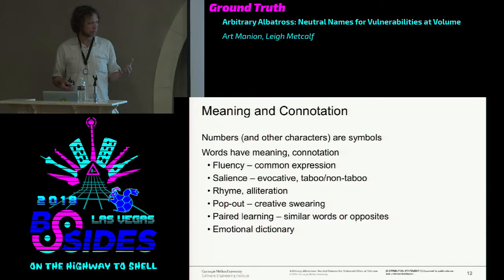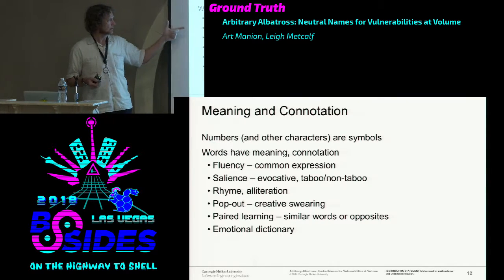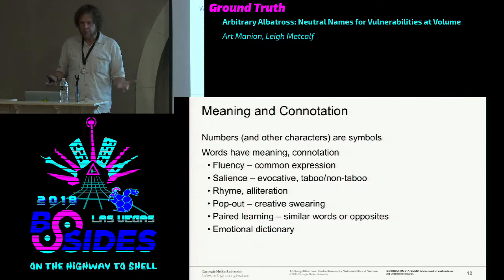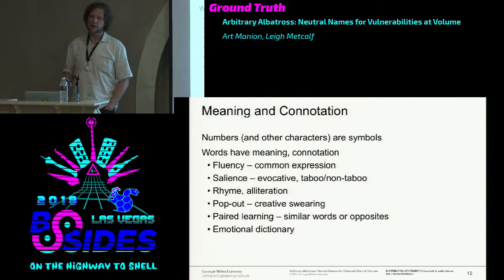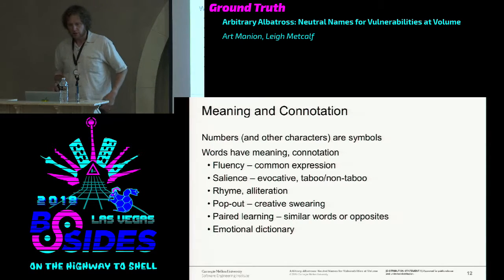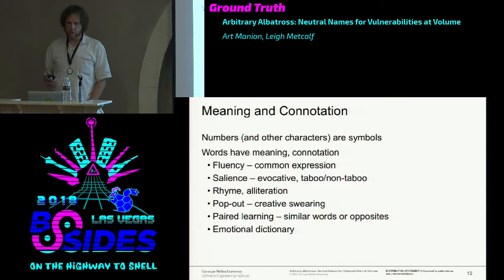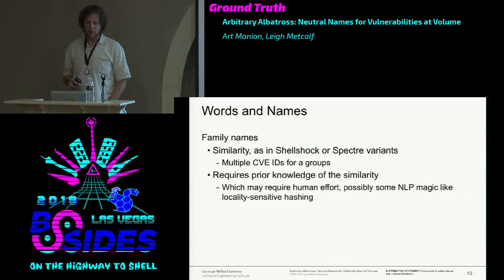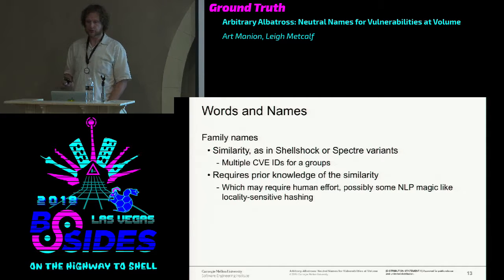If you want to have meaning and less neutrality, you can talk about common, well-known things, or things that evoke some meaning or are a little bit taboo. Rhyming and alliteration—'arbitrary albatross,' and my title has triple alliteration. Creative swear words: take a normal sounding thing and add an F in front of it and now you notice and remember it. Opposite words, similar words. You could do similarity: what if all the Shellshock vulnerabilities had the same partial word, like a last name—Mannion 1, Mannion 2, Mannion 3? That requires you to know similarity, which may be a human or machine-handleable problem.